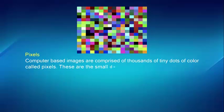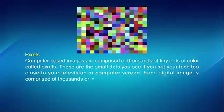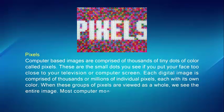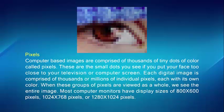Pixels. Computer based images are comprised of thousands of tiny dots of color called pixels. These are the small dots you see if you put your face too close to your television or computer screen. Each digital image is comprised of thousands or millions of individual pixels, each with its own color. When these groups of pixels are viewed as a whole, we see the entire image. Most computer monitors have a display size of 800x600 pixels, 1024x768 pixels, or 1280x1024 pixels.